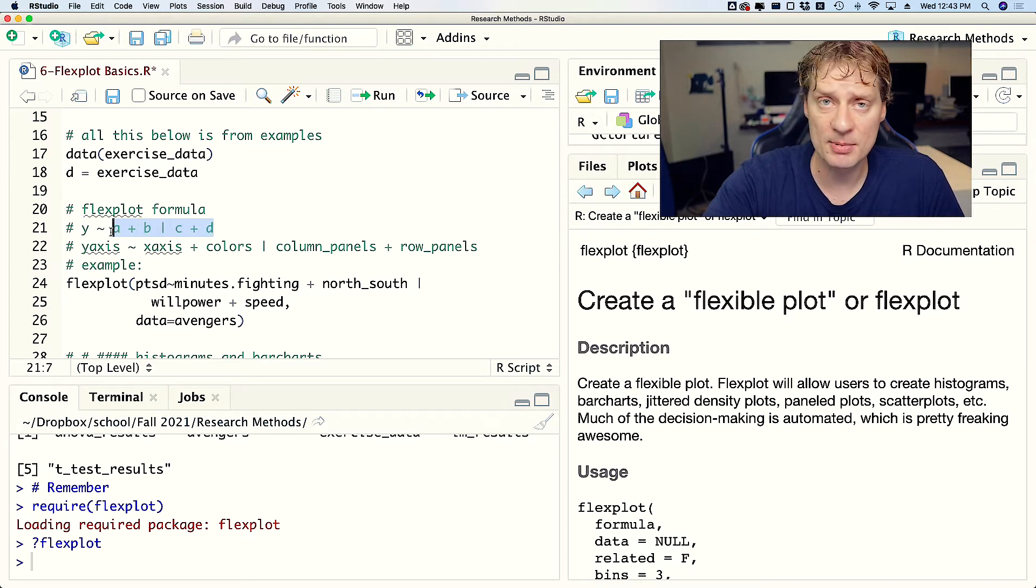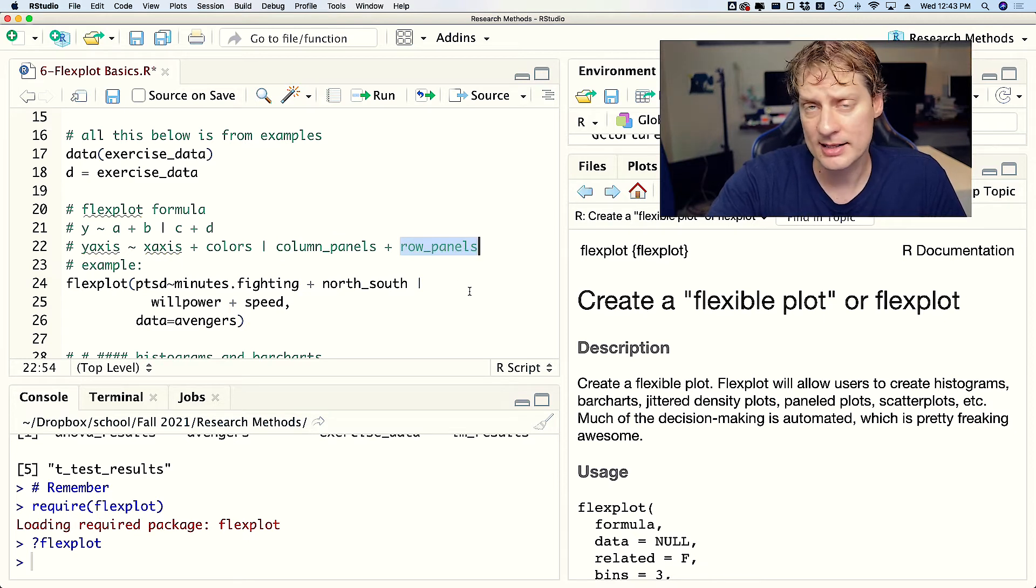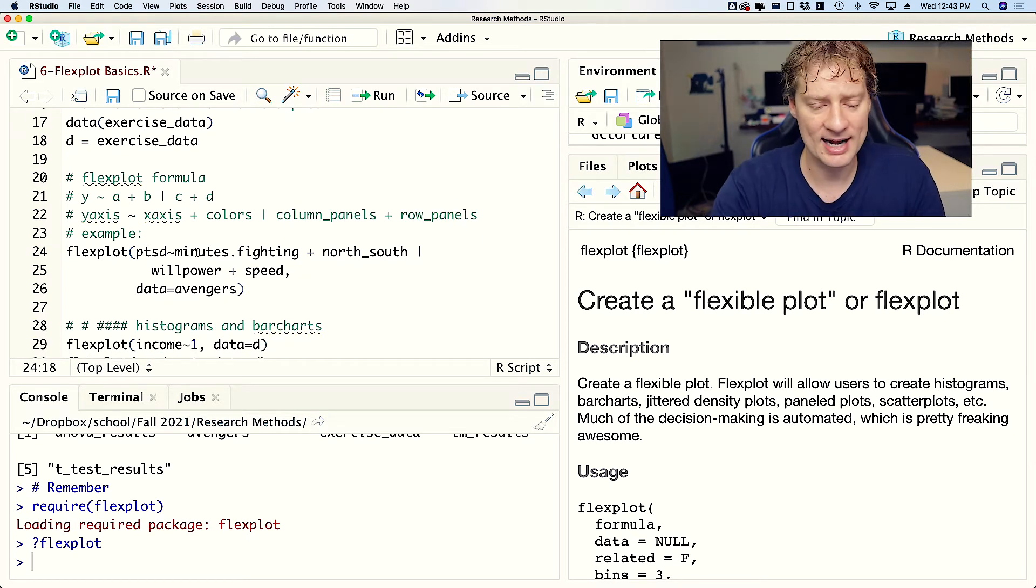Each of these might represent a variable. The variable that you put first is going to be on the y-axis, the one that immediately follows the tilde is going to be on the x-axis, the next one after the plus sign is going to be represented as colors, lines, and symbols. Anything after the vertical pipe is paneled, so the first one is going to be column panels, the second one is going to be row panels.